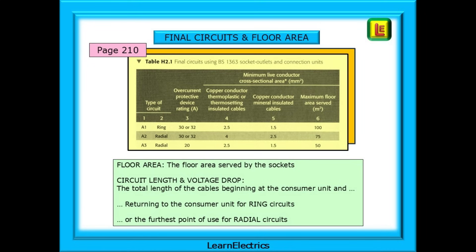This is Table H2.1 on page 210 of the On-Site Guide and contains some useful information. For an A1 circuit — a ring circuit — it tells us the type of circuit, breaker or fuse size, cable size, and the maximum floor area that should be served by that circuit. This is the area served by the sockets, not taking into account any route or other rooms that the cable passes through without serving. This is completely different to the circuit length and voltage drop, which is the total length of the cables beginning at the consumer unit and returning to the consumer unit for ring circuits, or the furthest point of use for radial circuits.